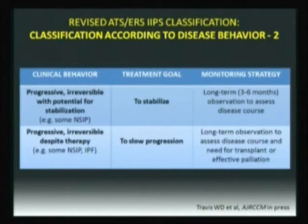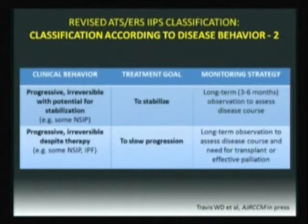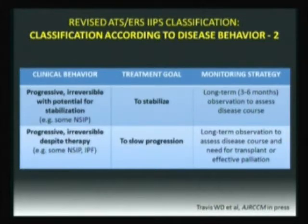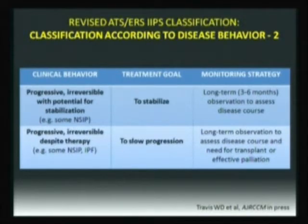Then the two other categories: progressive, irreversible, with potential for stabilization — the so-called fibrotic NSIP. You want to stabilize these patients with long-term observation. And then you get into the category of IPF, but also some NSIP — they will progress irreversibly despite therapy. Your aim here is to slow progression, not to reverse or stabilize the disease. That's a realistic treatment goal, and you will do long-term observation to assess disease scores and the need for transplant or effective palliation.